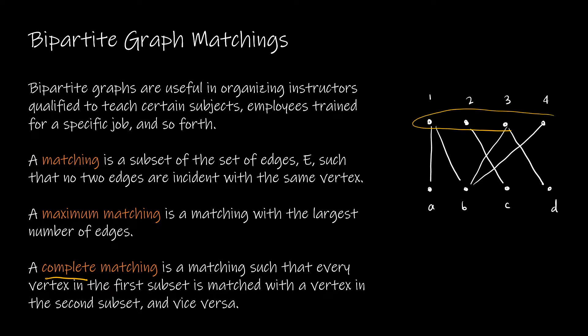Consider a bipartite graph with first subset {1, 2, 3, 4} and second subset {A, B, C, D}. For a complete matching, every element in the first subset must be matched to a distinct element in the second. For example: 2 matched to C, 3 matched to D, 4 matched to B, and 1 matched to A. This is a complete matching because every element in {1, 2, 3, 4} is connected to a unique element in {A, B, C, D} with no isolated vertices.